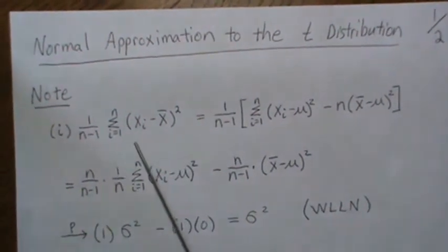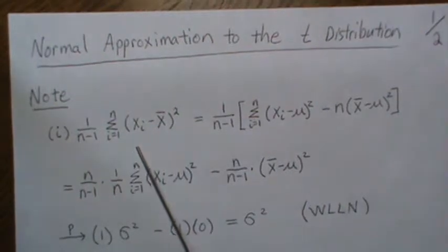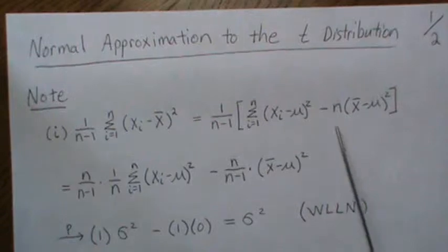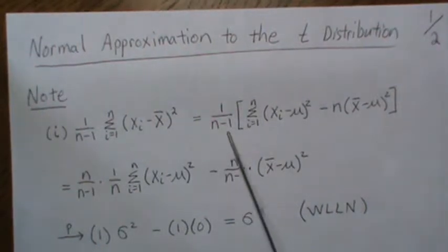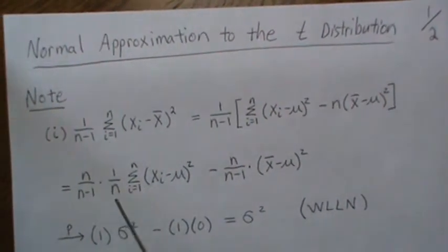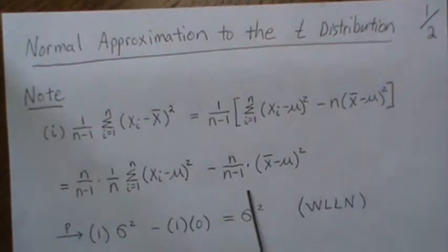If we look at the sample variance, you can rewrite the sum here as this difference. Now we distribute the 1 over n minus 1, and here we multiply and divide by n, and then we distribute the n minus 1 here.